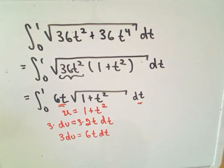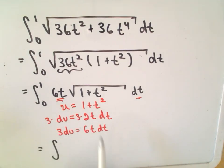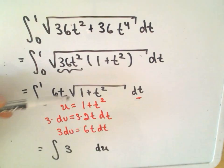So now we simply need to plug all of that stuff in. I'm going to go ahead and change my limits of integration as well. But first off, 6t dt that's going to become my 3du. And now underneath the square root, that's what we're calling u.